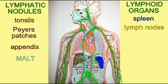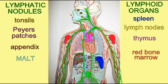Two other lymphoid organs are the thymus, which is located just deep to the sternum over the heart, and red bone marrow, where white blood cells are produced. These two tissues — the thymus and the red bone marrow — are referred to as primary lymphatic organs, because these are the sites where immunocompetent white blood cells are produced, rather than sites where microbes are typically destroyed by white blood cells.